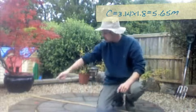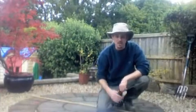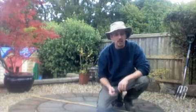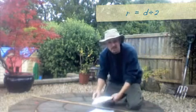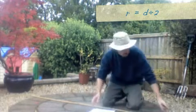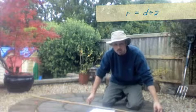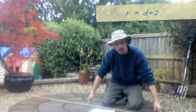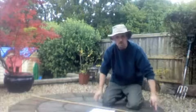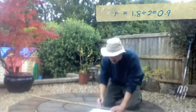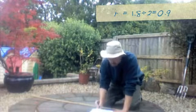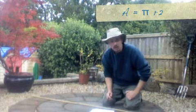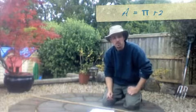The distance all the way around the edge of the circle is 5.65 metres. Now the other information I need to find out is the area. To calculate the area, it's pi r squared. For r I mean radius. The radius is the distance from the edge of the circle to the centre point — not like the diameter that goes all the way across, but halfway across to the centre. So I know the diameter is 1.8, meaning the radius is half of that.